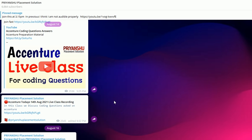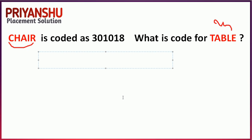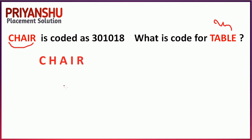First question: CHAIR is coded as 3-0-1-0-1-8. What is the code for TABLE? Let's check the pattern. For CHAIR: C-H-A-I-R. The code for C is 3, H is 8, A is 1, I is 9.